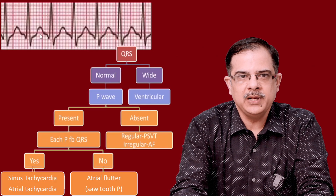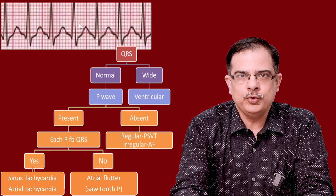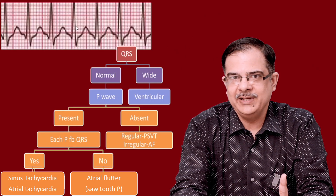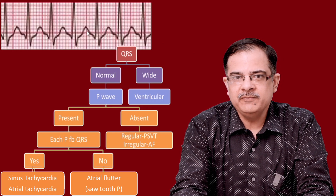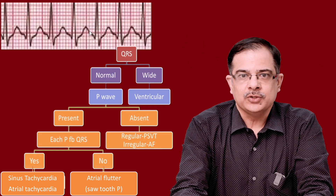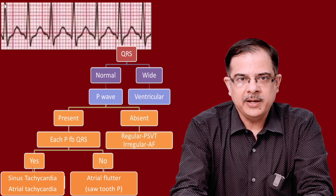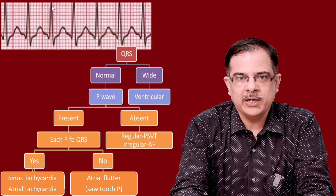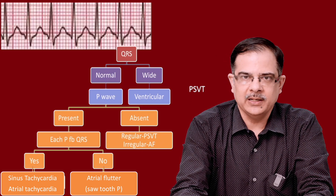Next ECG: QRS complex is normal in width. Looking at P waves between two QRS complexes: usually there should be two waves — one T and one P — but only one wave of the same morphology is present throughout. Considering this as a T wave, P wave is absent. It could be PSVT or atrial fibrillation. The RR interval is fairly regular, indicating a regular rhythm. Therefore the diagnosis is PSVT.